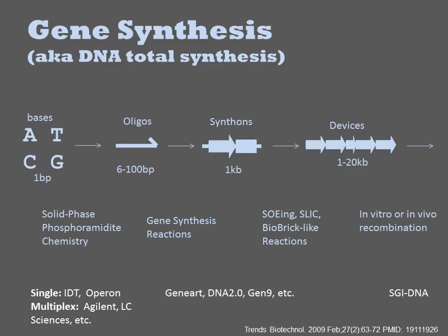All current protocols for gene synthesis begin with solid-phase phosphoramidite chemistry. Individual A, T, C, and G nucleotides are biologically derived, but they are extensively derivatized using synthetic organic chemistry.